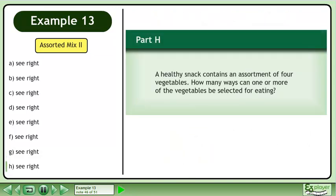Now we'll move on to part H. A healthy snack contains an assortment of four vegetables. How many ways can one or more of the vegetables be selected for eating?